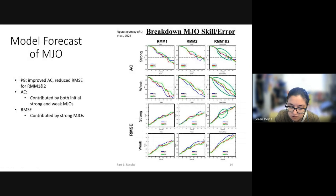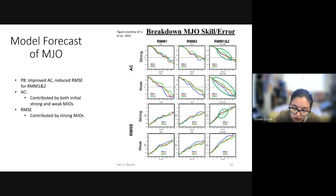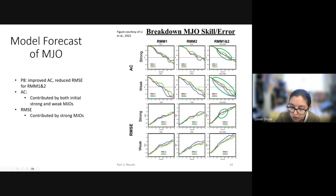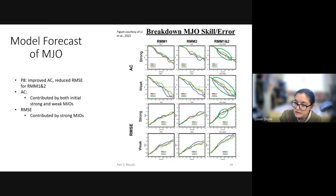The MJO forecast of UFS was performed by Stefanova et al., with the figure from Lee et al. Results show RMSE and anomaly correlation of the RMM indices in UFS prototypes six through eight. Prototype eight shows improved anomaly correlation and reduced RMSE in RMM1 and RMM2. The improvement in anomaly correlation is contributed by both initial strong and weak MJOs, and reduced RMSE is contributed by strong MJOs. Overall, the MJO is represented in both prototypes with a slight improvement in prototype eight versus prototype six.